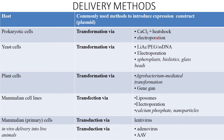The delivery method varies with the host type. For prokaryotes, transformation is via calcium chloride and heat shock or electroporation. For yeast cells, transformation is via electroporation, spheroplast, biolistics, or glass beads. For plant cells, transformation is via Agrobacterium-mediated transformation or gene gun. For mammalian cell lines, transformation is through liposomes, electroporation, calcium phosphate, or nanoparticles. For mammalian primary cells, transduction via lentivirus is used, and for in vivo delivery into live animals, transduction via adenovirus is used.